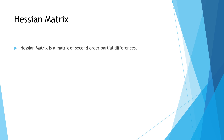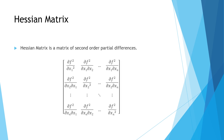The Hessian matrix is the matrix of second-order partial derivatives. In the first row you have ∂²f/∂x1², then ∂²f/∂x1∂x2, up to ∂²f/∂x1∂xn. Similarly the second row has ∂²f/∂x2∂x1, then ∂²f/∂x2², and so on. This is the Hessian matrix.